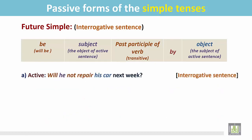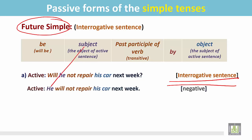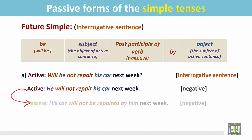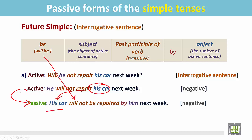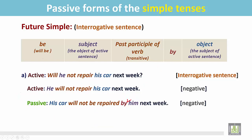Another example: 'Will he not repair his car next week?' — an interrogative sentence in the future simple. First we change this interrogative sentence into affirmative: 'He will not repair his car next week.' Here 'he' is the subject, 'repair' is the transitive verb, and 'his car' is the object. We change this into a passive sentence: 'his car' (the object) becomes the subject; 'will' is the be verb — and to make it negative, 'will not be'; 'repaired' is the past participle; 'by' is the preposition; and the subject of the active sentence becomes the object.